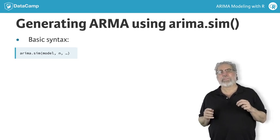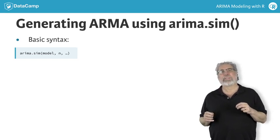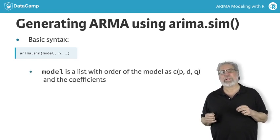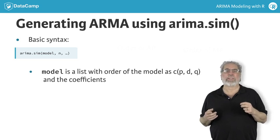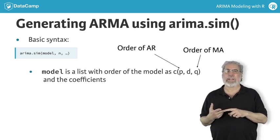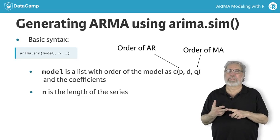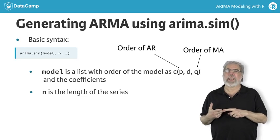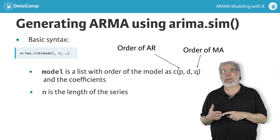There are a few ways to specify the model, but the easiest way is to specify the order P — the AR order — D, which we haven't discussed yet, and Q, the MA order.